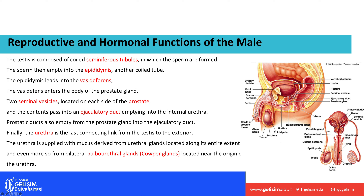As we go down through the urethra we encounter the bulbourethral gland near the base. The glans penis also produces some fluid. All these different tissues and cells produce fluids that aid in the passage of seminal fluid, which mixes with the sperm cells.